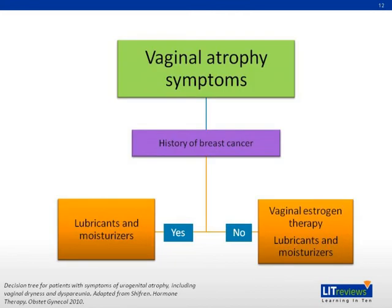Treatment of vaginal thinning and dryness consists mainly of lubricants and moisturizers. Hormonal treatment in the form of low-dose vaginal estrogen therapy can be used in patients with no history of breast cancer.